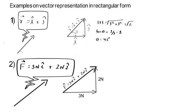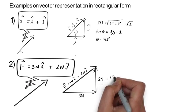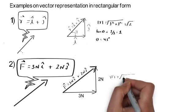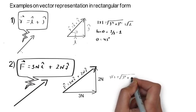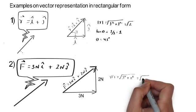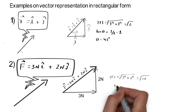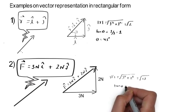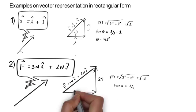This vector has its own magnitude and direction. The magnitude is found from the Pythagorean theorem: √(3² + 2²) = √13 N. The direction this vector makes with the X axis is given by tan θ = 2/3.